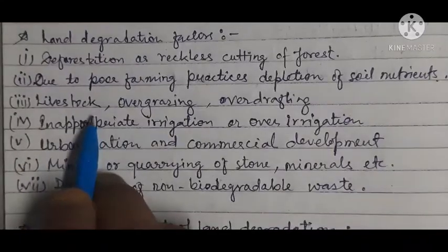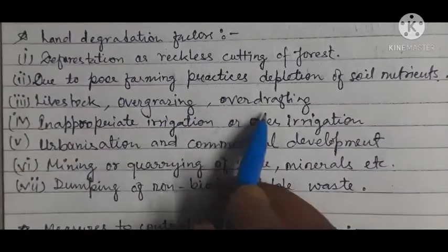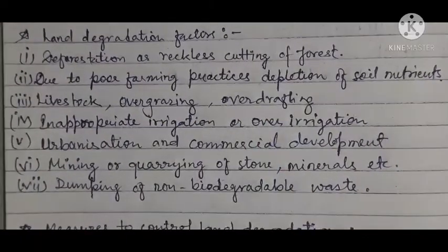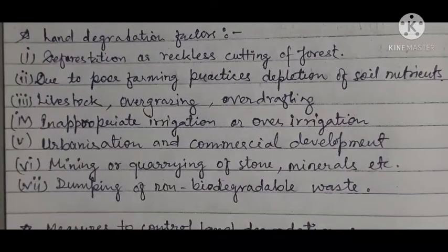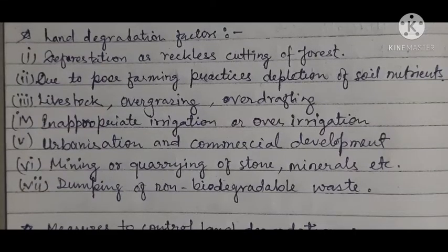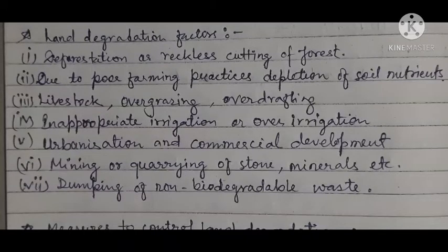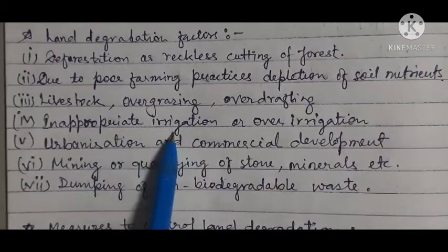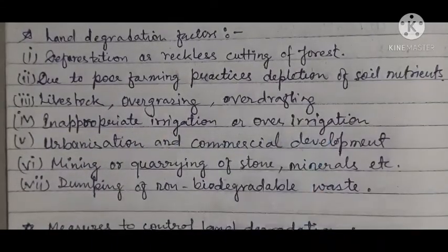Number three is livestock, overgrazing and overdrafting. Overdrafting land means using it excessively. Overgrazing and livestock — when we keep too many animals and cattle and take them to the grazing land, obviously the pasture land and grazing land will be grazed more and more. So it is necessary to control this.